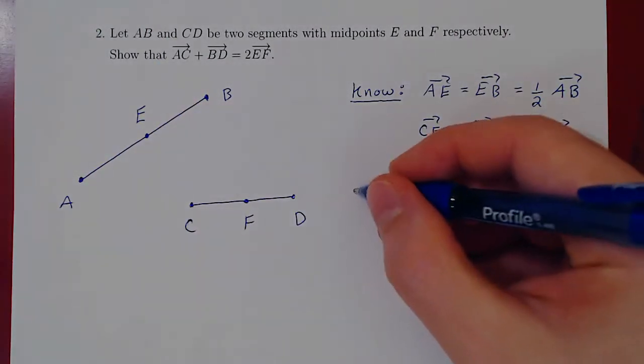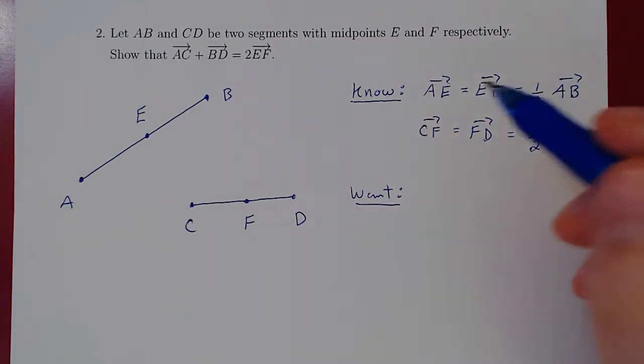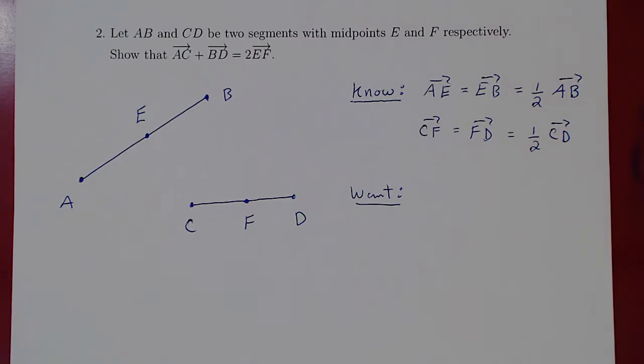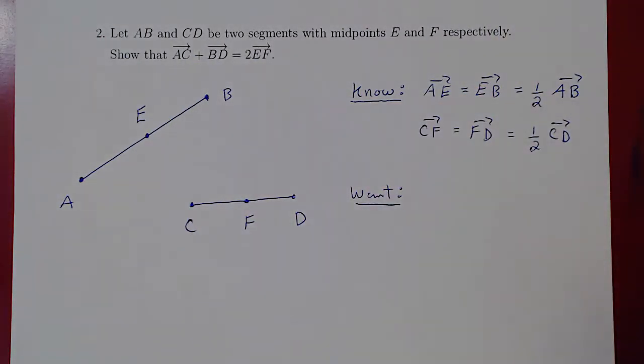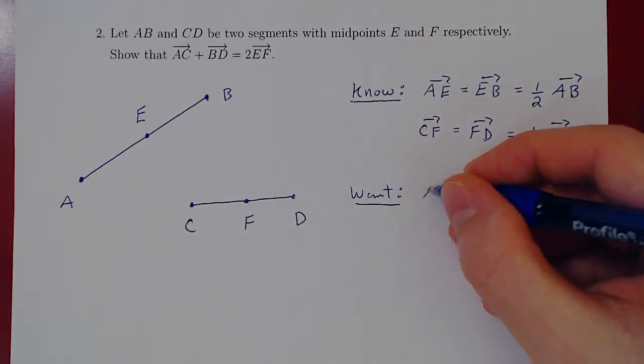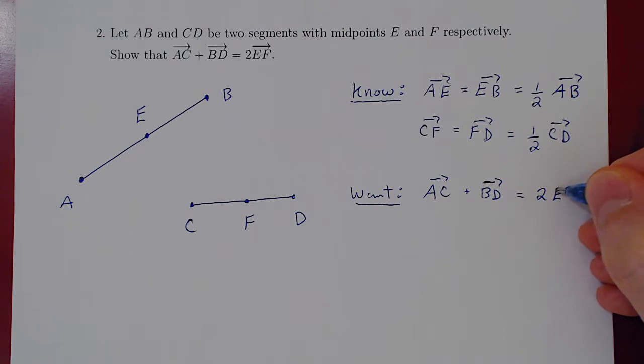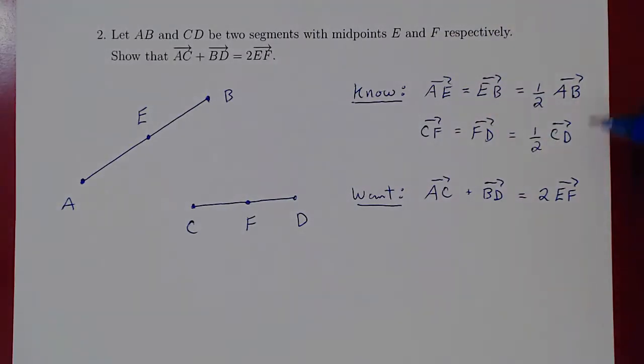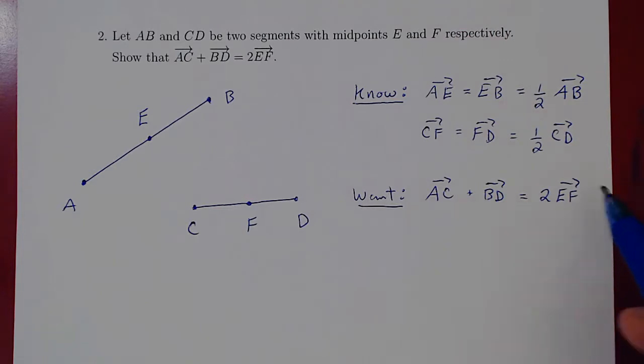And here's what we want to show. And here it's quite simple. We're already given the equality as a vector equality. So there's no need to translate, but you'll see some other problems. We will have to translate what we want to show using equalities between vectors. But here we simply want to show that AC plus BD actually is twice of EF.